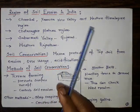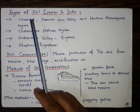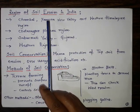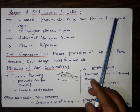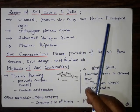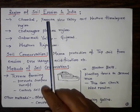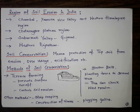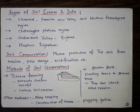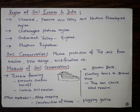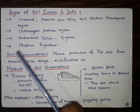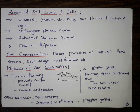Regions in India where soil erosion is taking place: Chambal is known for gully erosion. River Yamuna valley is known for sheet erosion. Western Himalayas, due to massive height and very steep slopes, are prone to gully erosion. Chota Nagpur plateau, being a tableland with steep slopes, is also prone to gully erosion.